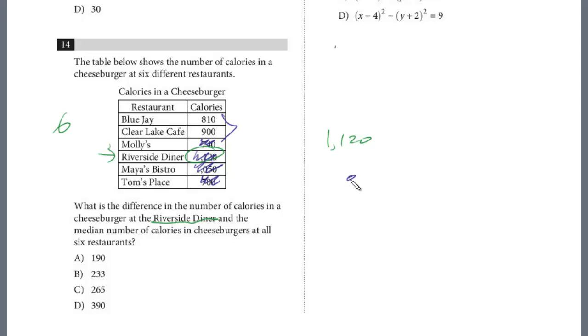And so we want 810 plus 900. Just use our calculator that looks to be 1710 and divide that by 2. I know that if it's 700, it would be 850. So it looks like 855.